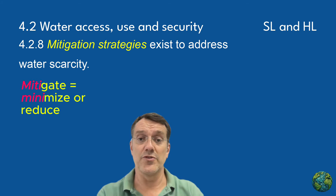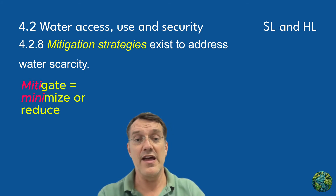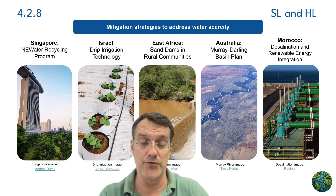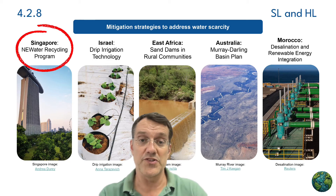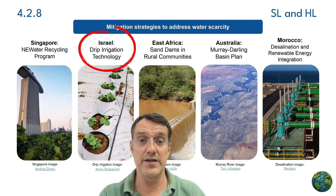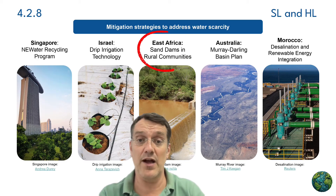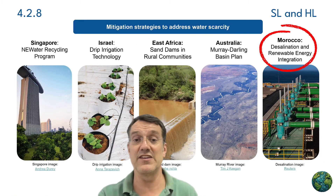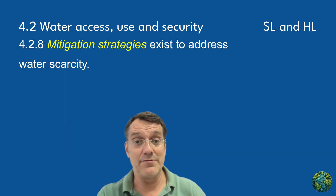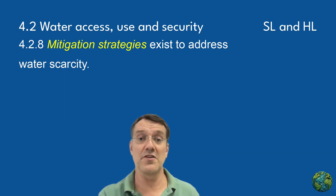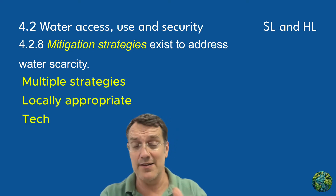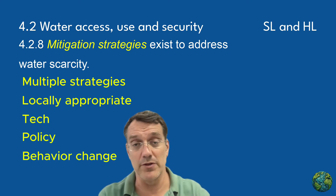Mitigation strategies to address water scarcity vary widely based on regional conditions, economic resources, and specific water challenges. The examples shown here represent diverse approaches: Singapore's NEWater recycling program, Israel's drip irrigation technology, East Africa's sand dam projects, Australia's Murray-Darling Basin Plan, and Morocco's integration of desalination with renewable energy. Effective mitigation typically requires combining multiple strategies tailored to local conditions and integrating technological, policy, and behavioral approaches.